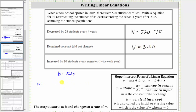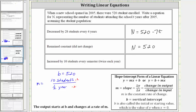In the last row, we're told the student population increased by 10 students every semester, which means twice a year since there are two semesters in a year. So one way to state this rate of change would be 10 students per half a year. To simplify this rate, we can multiply the numerator and denominator by two: 10 times two is 20, giving us 20 students per one year. Simplifying and leaving the units off, we have the slope m of 20, which gives us n equals 520 plus 20t.